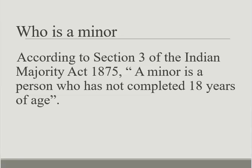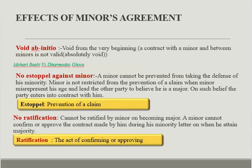The reason why a minor cannot enter into a contract is that a minor has an immature mind and cannot think about what is good or bad for his benefit. Therefore, a minor cannot enter into a contract, and any agreement or contract with a minor is void ab initio — that is, void from the very beginning.